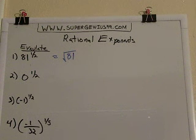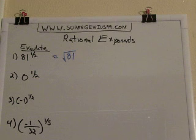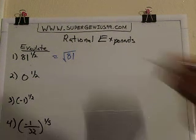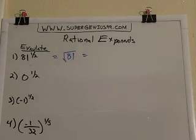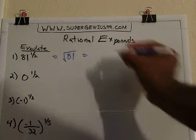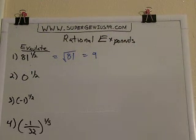The square root of 81 is just asking what two identical numbers you multiply together to get 81. What is that? That's 9 times 9. So the square root of 81 is 9.